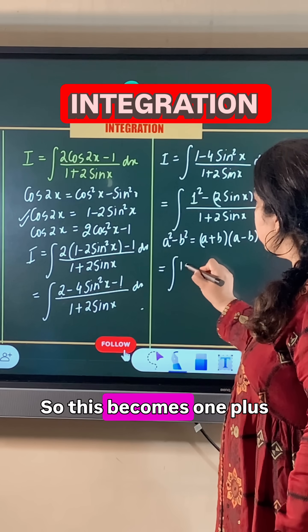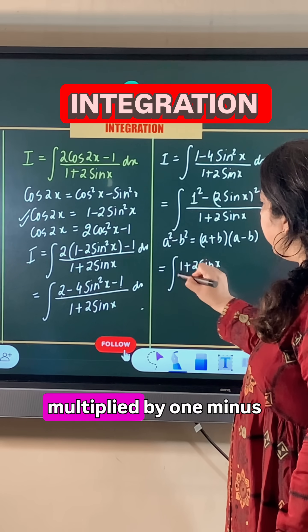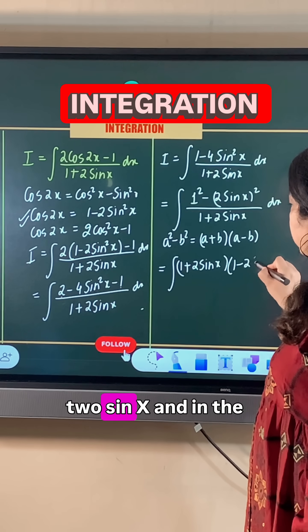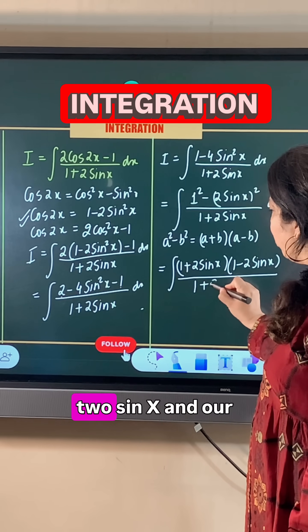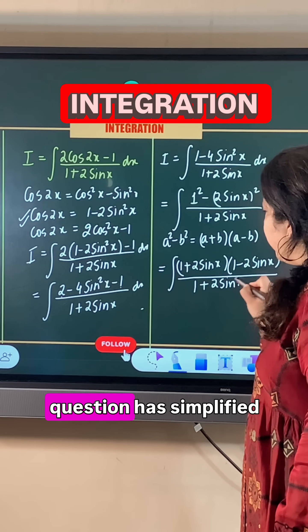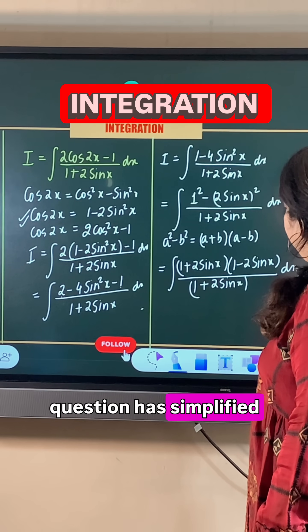This becomes (1 + 2sinx)(1 - 2sinx) in the numerator, and 1 + 2sinx in the denominator. Our question has simplified beautifully.